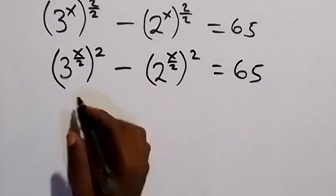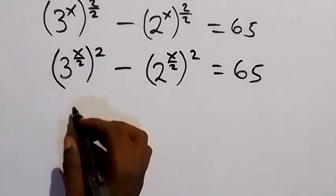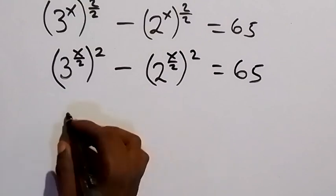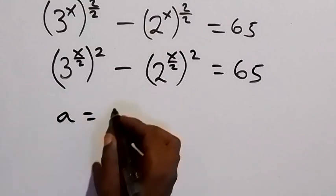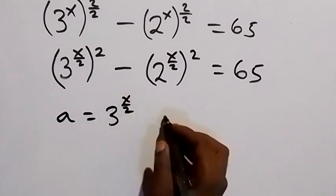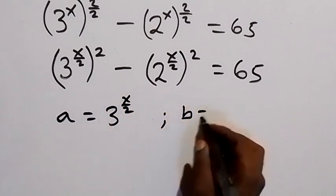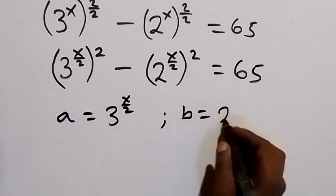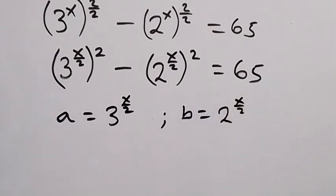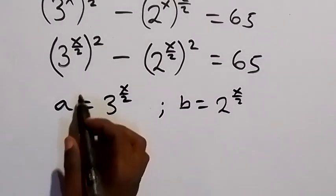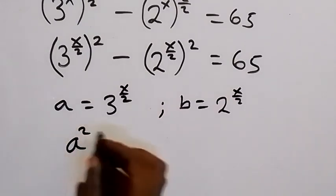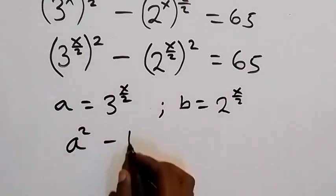From here we can use a letter to represent these terms. Let a be equal to 3 raised to power x over 2, and let b be equal to 2 raised to power x over 2. Then we rewrite the expression in terms of a and b, giving us a squared minus b squared equals 65.